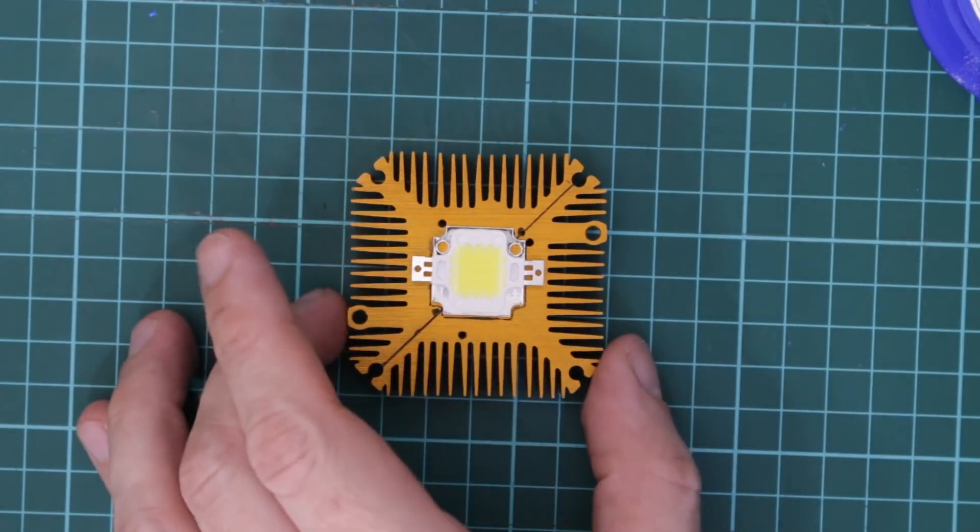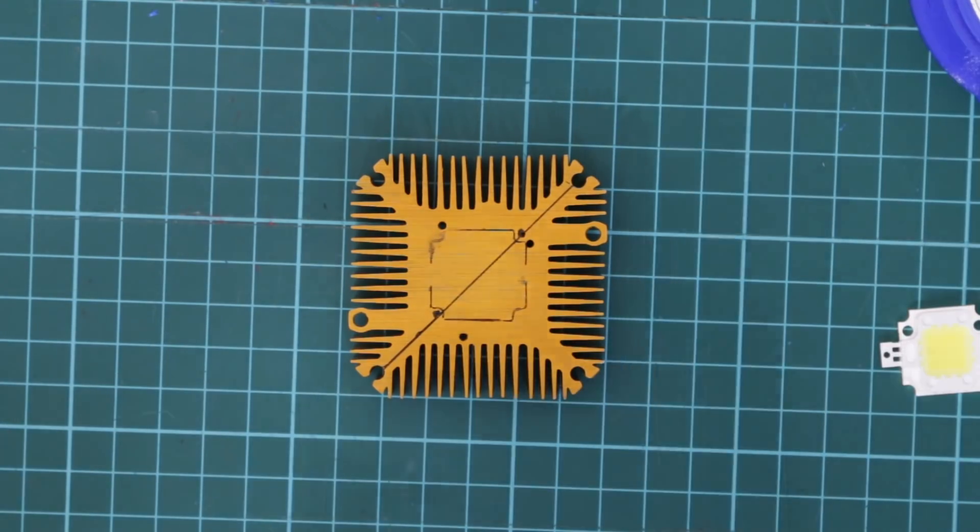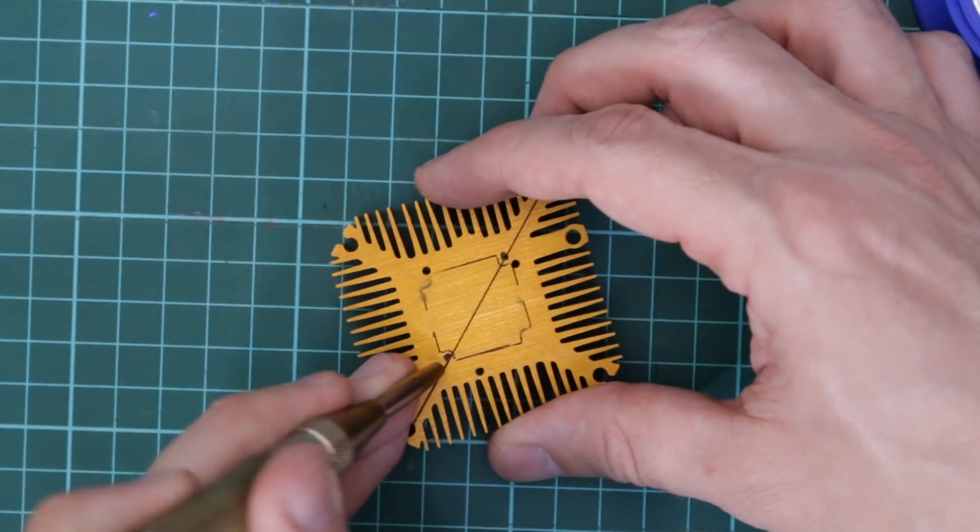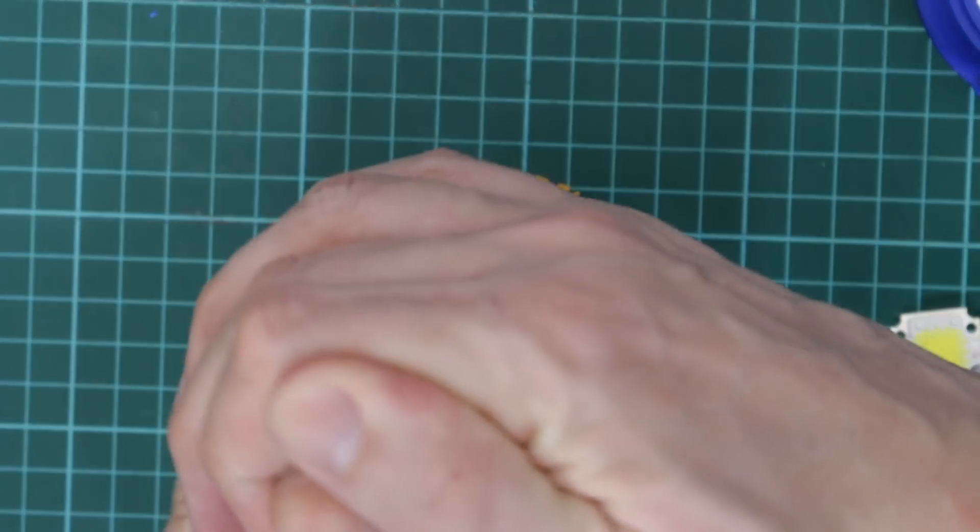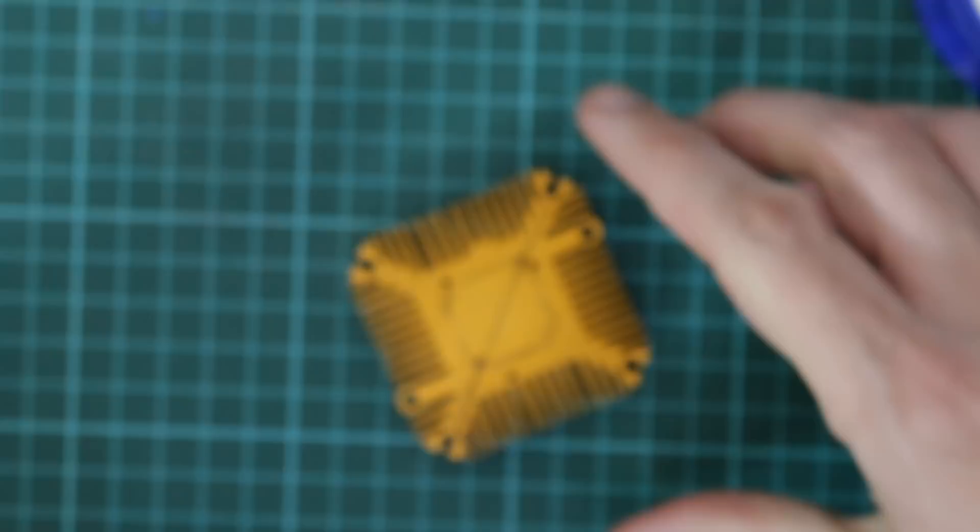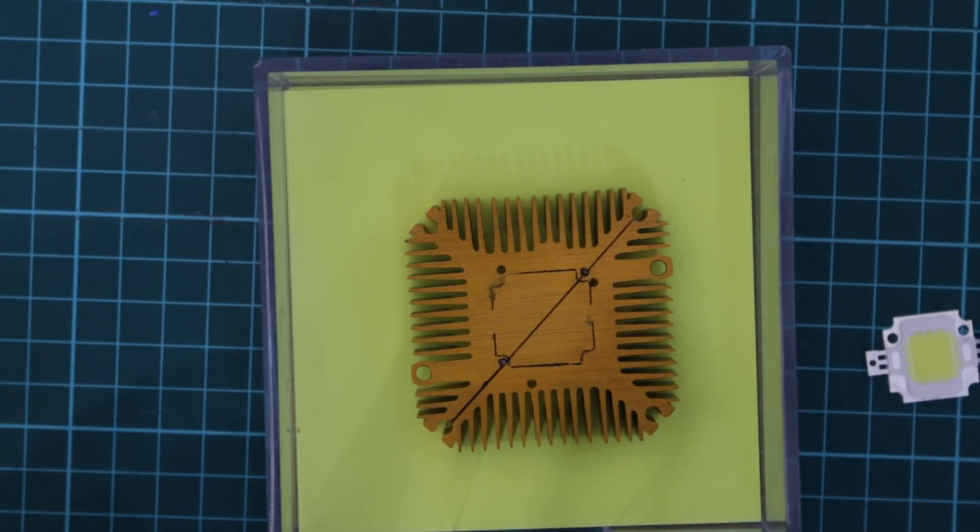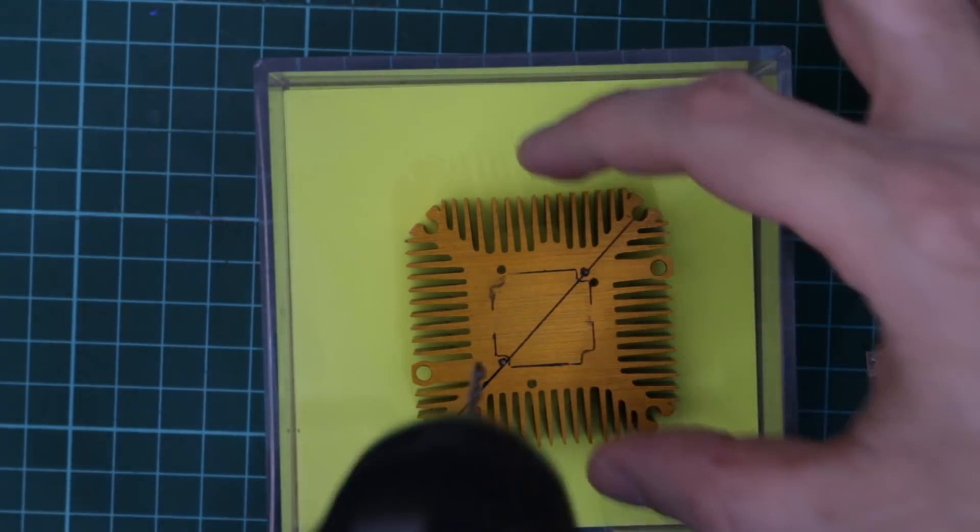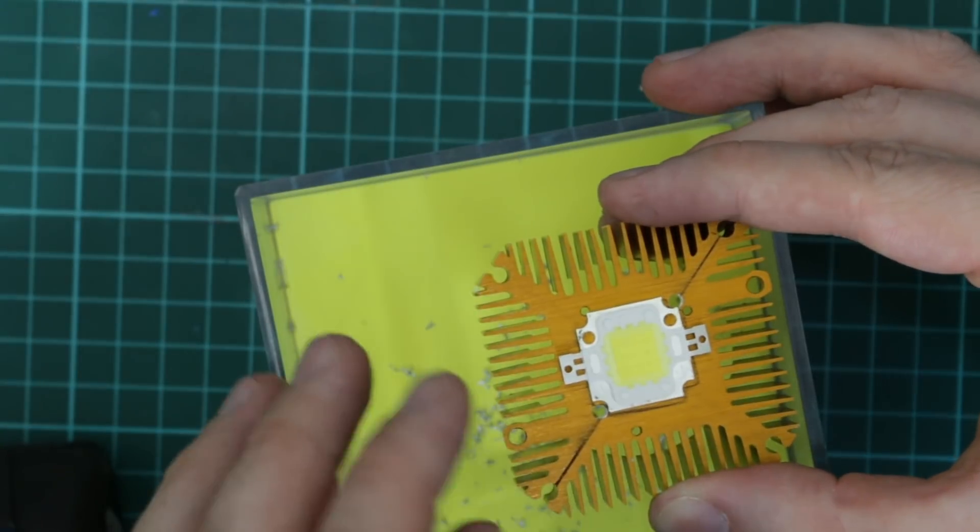So this is the heat sink that the LED is going to sit on top of and I've just marked the outline and then I'm just going to mark where I want to drill the bolt holes for holding this in. So I'm just going to mark that with a punch. So the screws or bolts I've got for holding the LED in are three millimeter. So I'm going to drill with a two and a half millimeter drill bit through these.